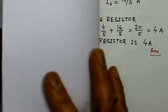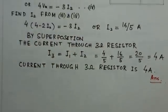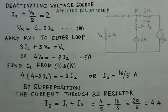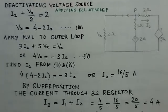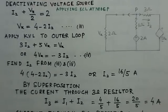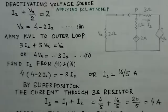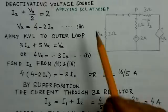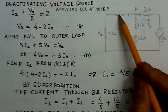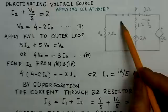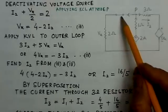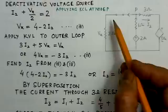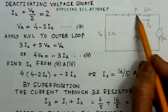Similarly we will be able to find the value for the current through this 3 ohm resistor by deactivating the voltage source. Once we deactivate the voltage source it is replaced by a short circuit. And we apply KCL at node P.